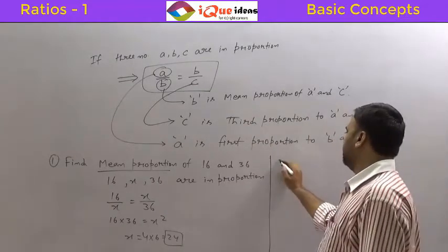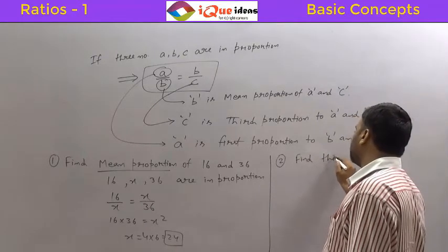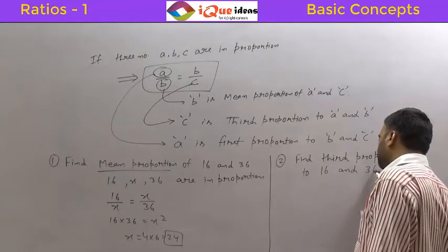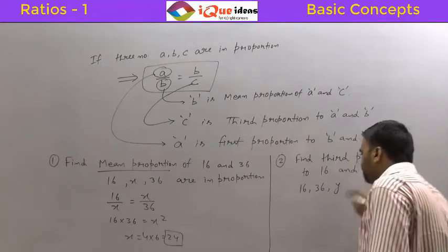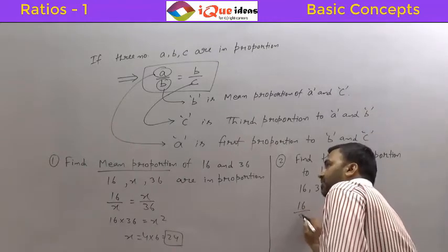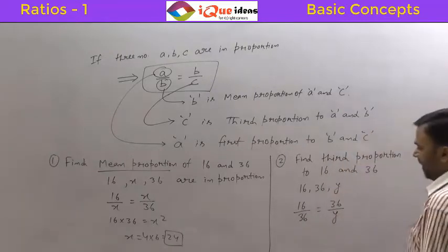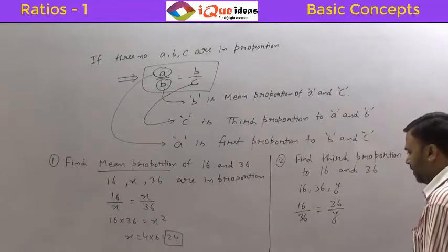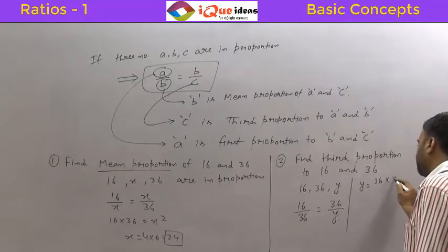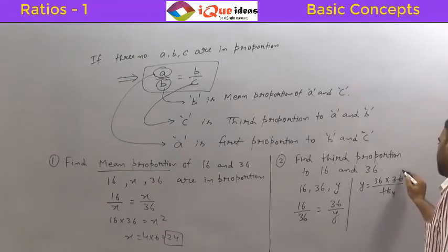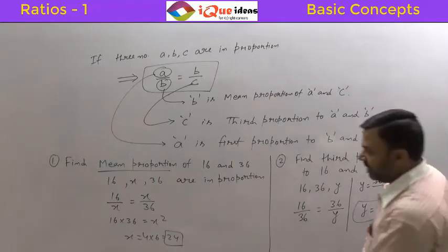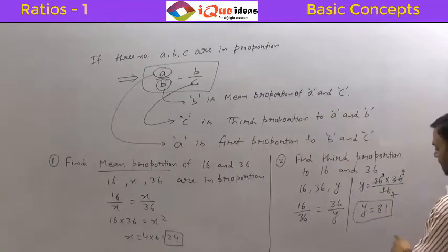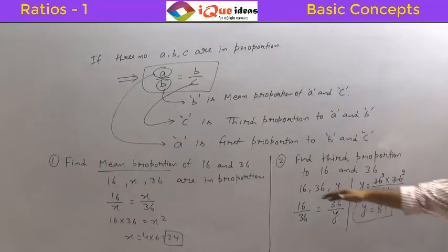Now, find third proportion to 16 and 36. The third proportion should come at the end, so we write 16, 36, and then y. We write 16 upon 36 equals 36 upon y. Simplifying, y equals 36 into 36 divided by 16, which gives us y equals 81. So 81 is the third proportion to 16 and 36.